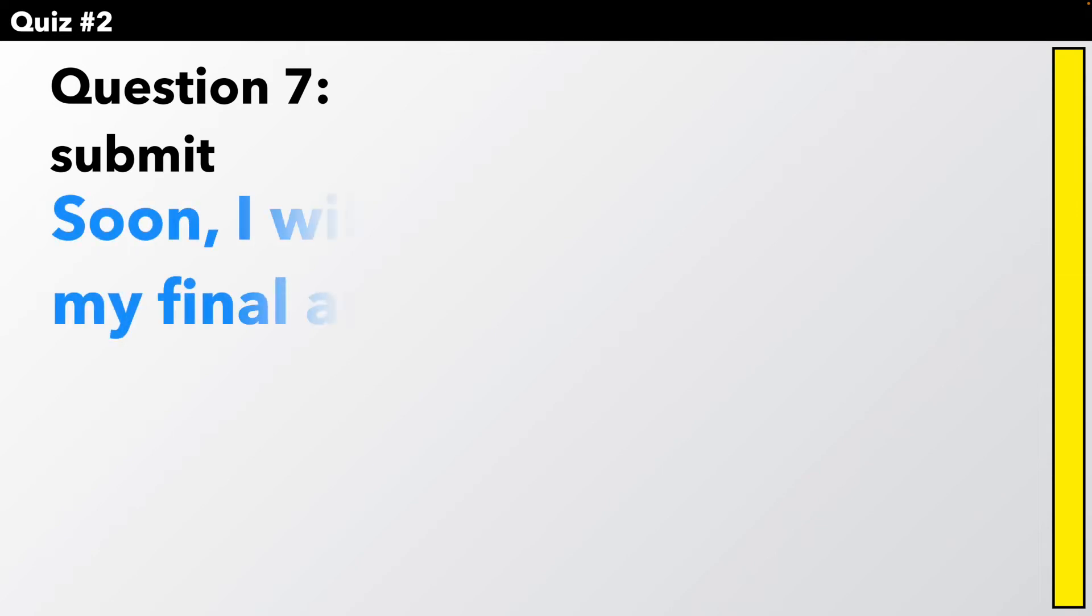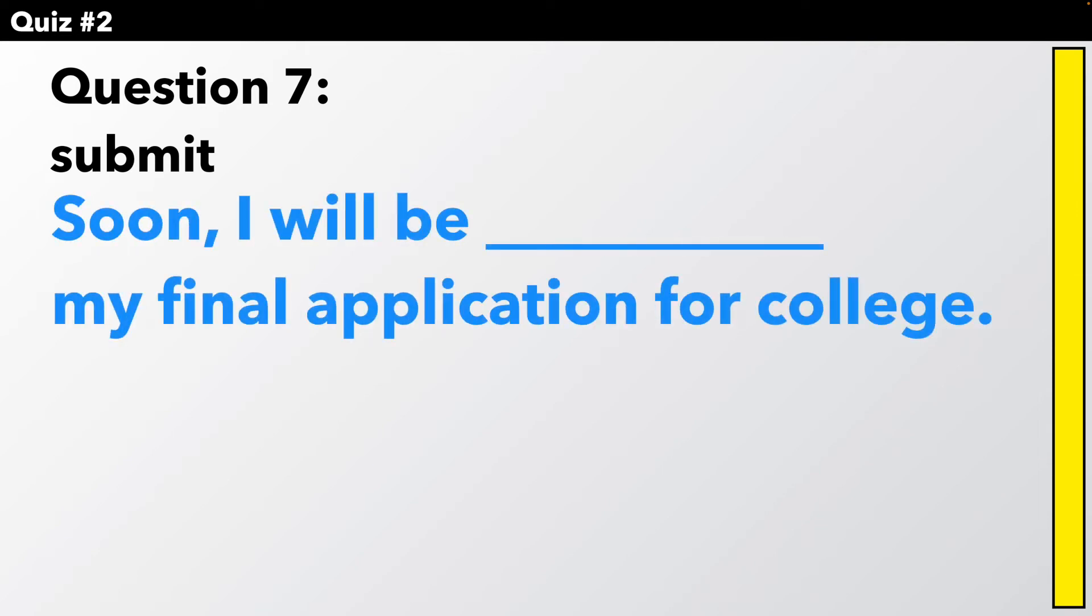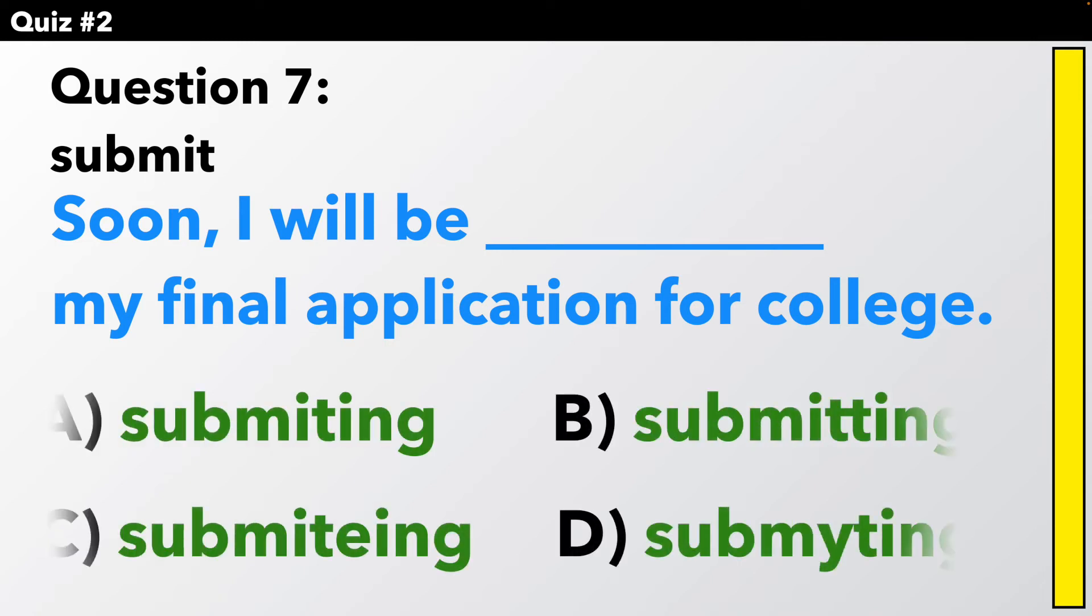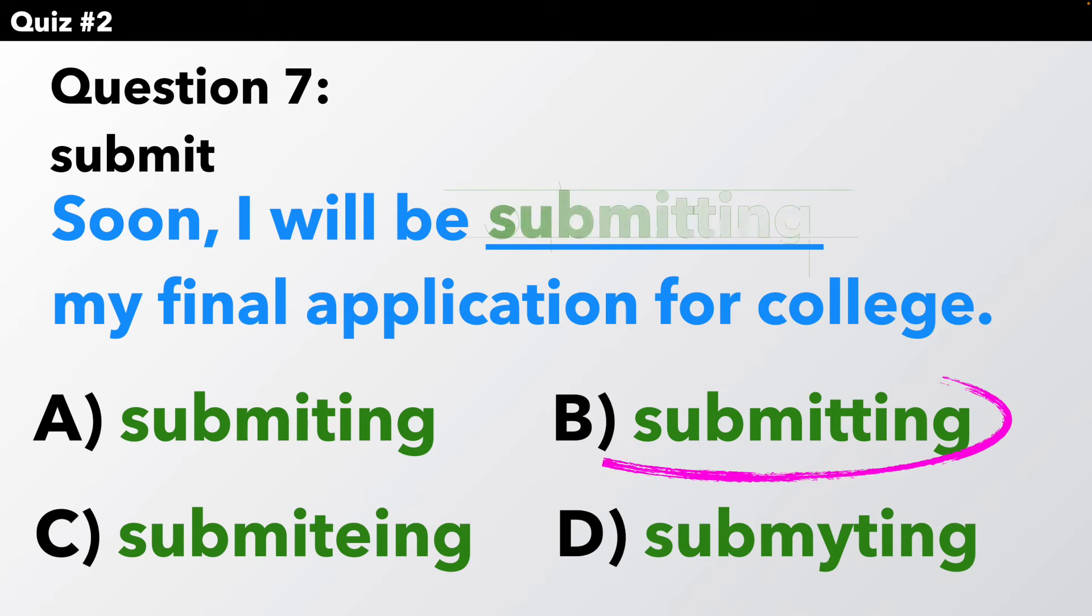Question number seven. Submit. Soon, I will be submitting my final application for college. Which is the correct spelling of submitting? The answer is B. We are going to double that T before we add I-N-G.